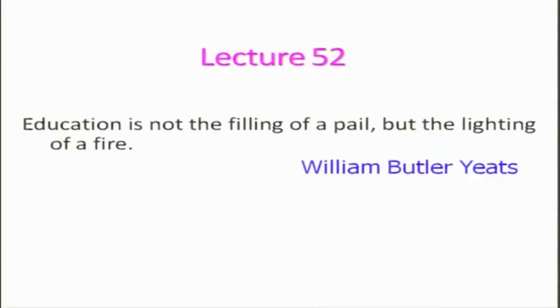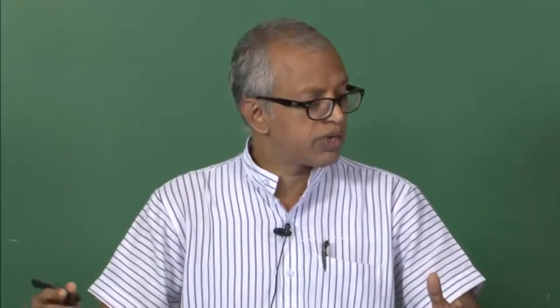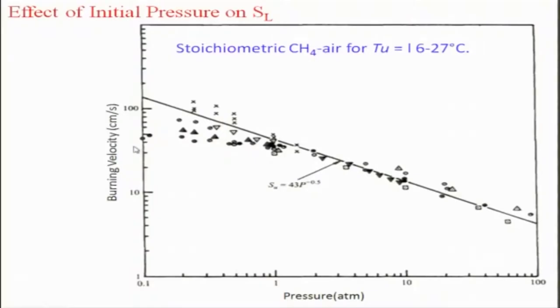In the last lecture, we looked at the effect of pressure on the laminar burning velocity, and we looked at how it depends on the order of reaction. Let us look at some experimental data taken from the literature — these are burning velocity versus pressure in atmospheres — and you can see that most of the data are scattered around, and if you fit a curve it comes around to S_p to the power minus 0.5.